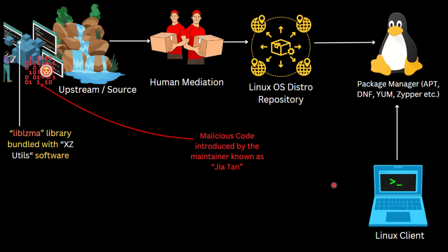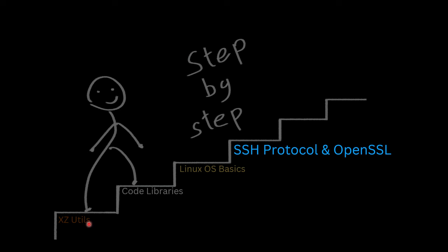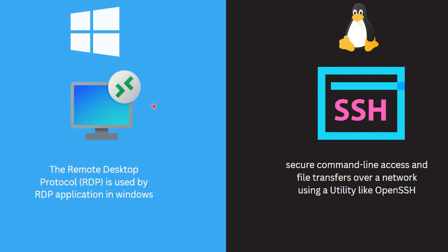Now let's understand the SSH protocol and OpenSSL, because the backdoor in XZ Utils goes on to compromise the SSH service in a way that it bypasses authentication for the attacker. Just like Windows has the Remote Desktop Protocol used by the Remote Desktop application, SSH is a secure protocol used in Linux for taking command-line access and transferring files over the network in an encrypted, secure way — using a utility like OpenSSH.